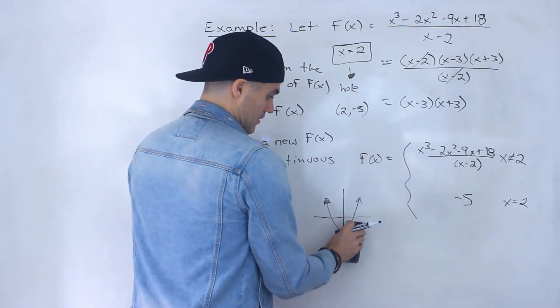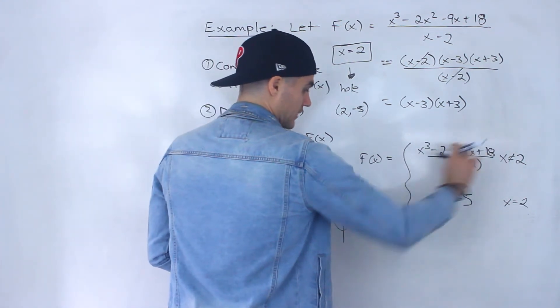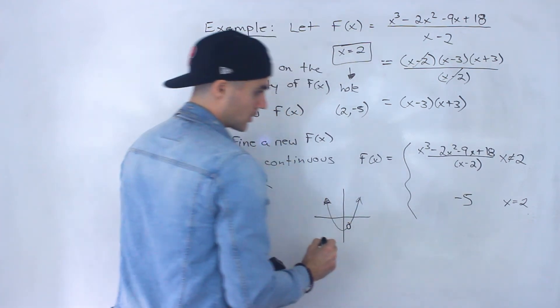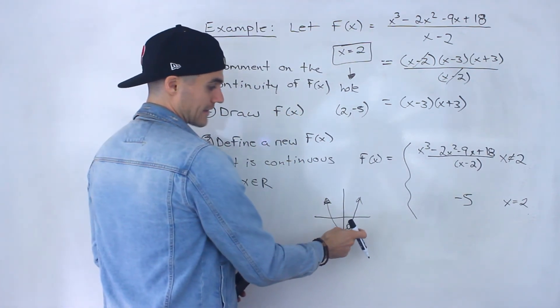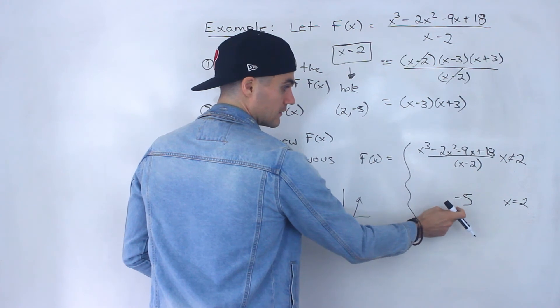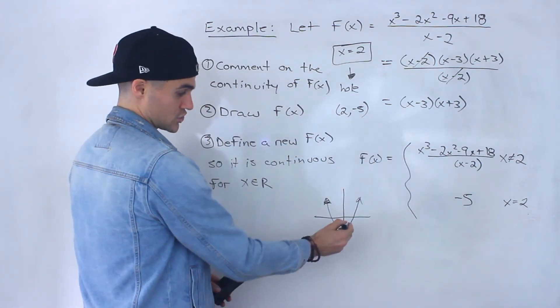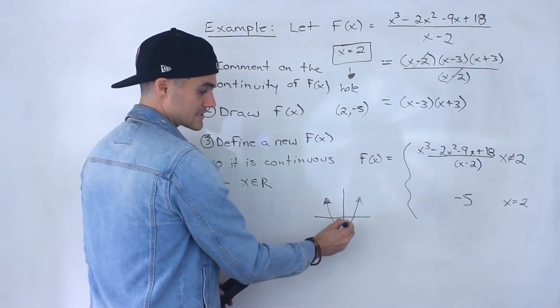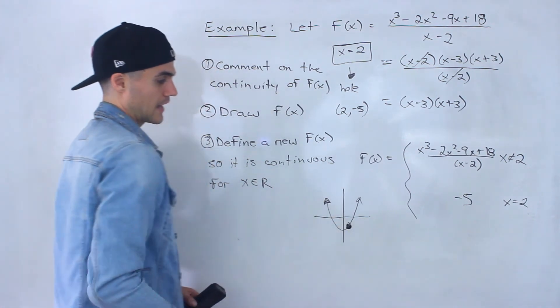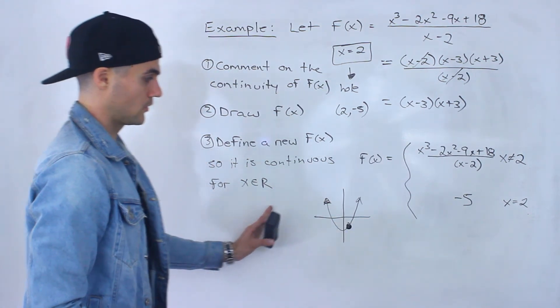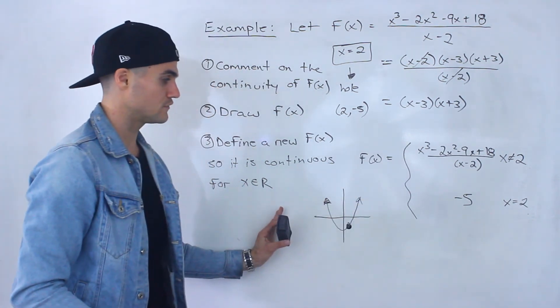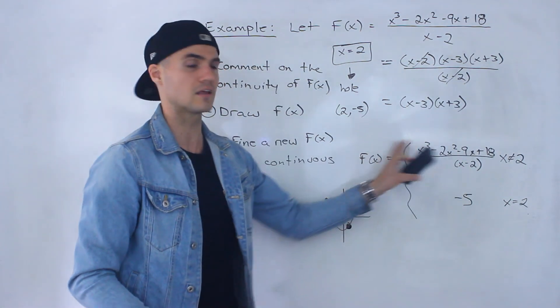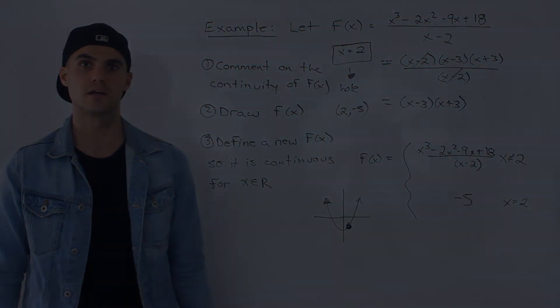And then, but what's going to happen is if we just look at this at 2, there's going to be a hole, but now at 2 we're defining a y value of negative 5, which is where that hole is located. So now we're, it's like we're filling in that hole. And now notice for all x values from negative infinity to positive infinity, this function is going to be continuous.